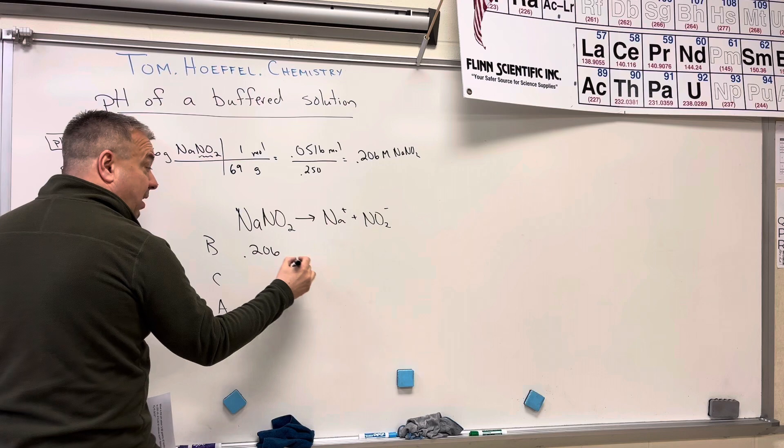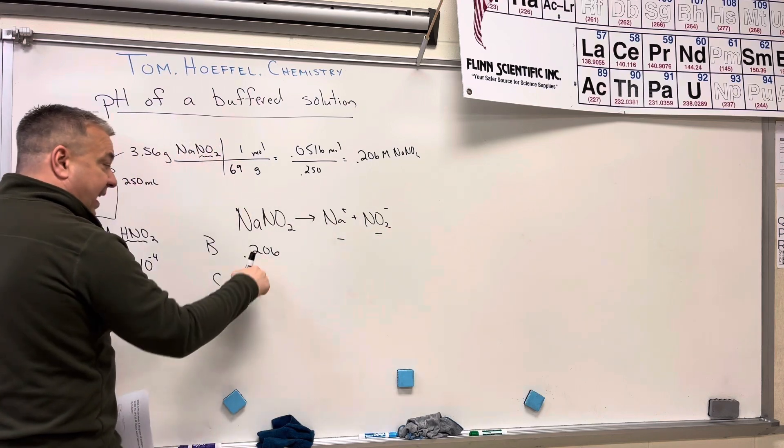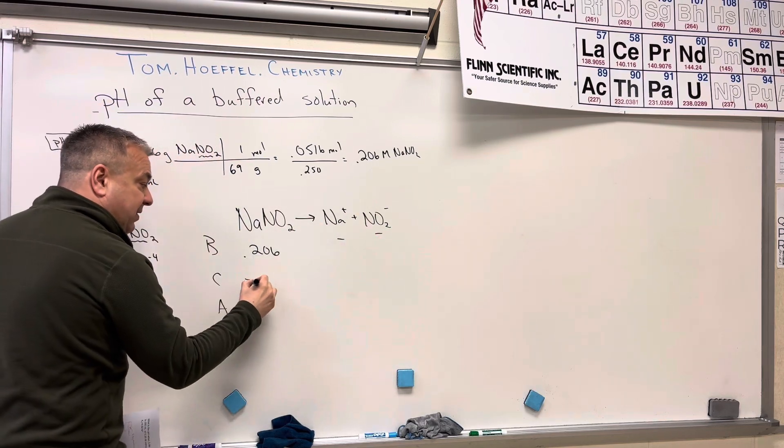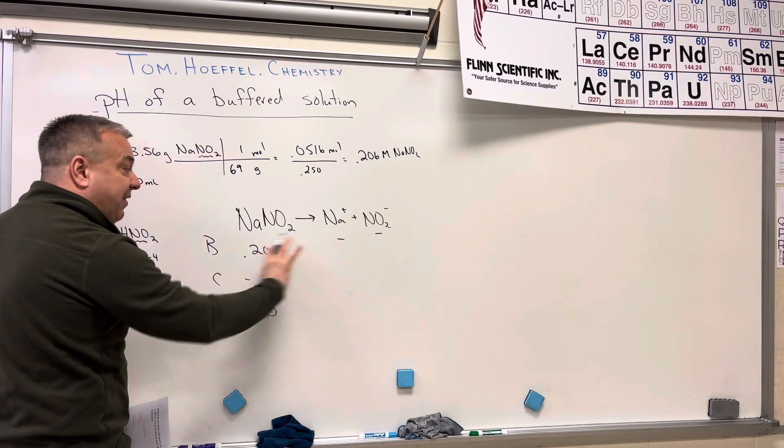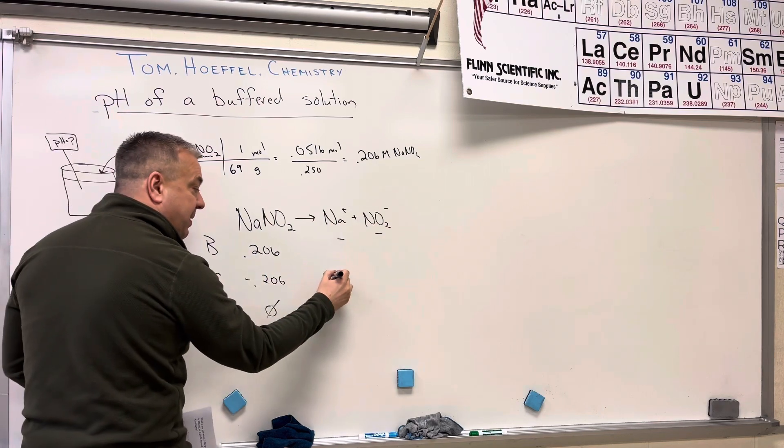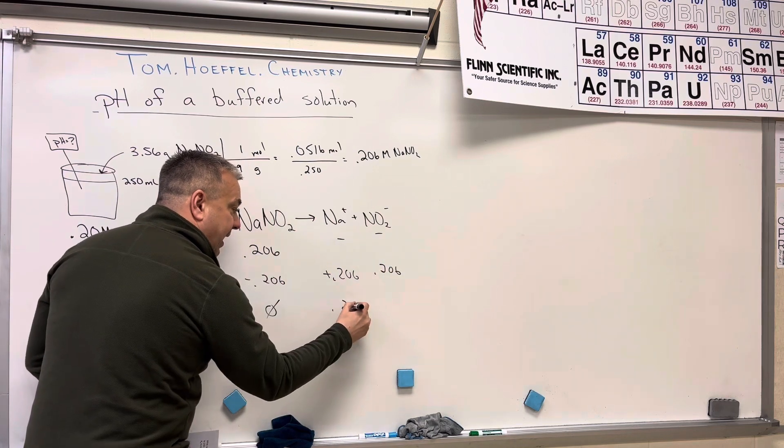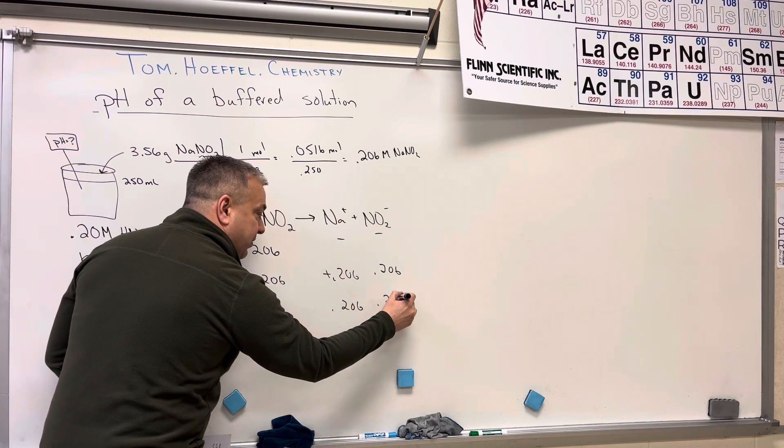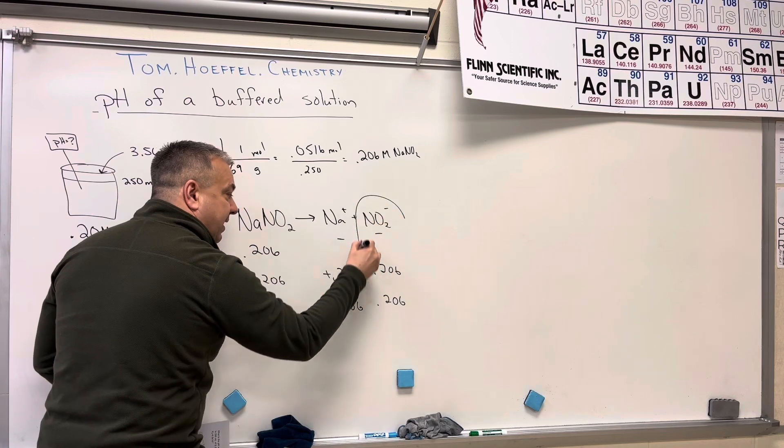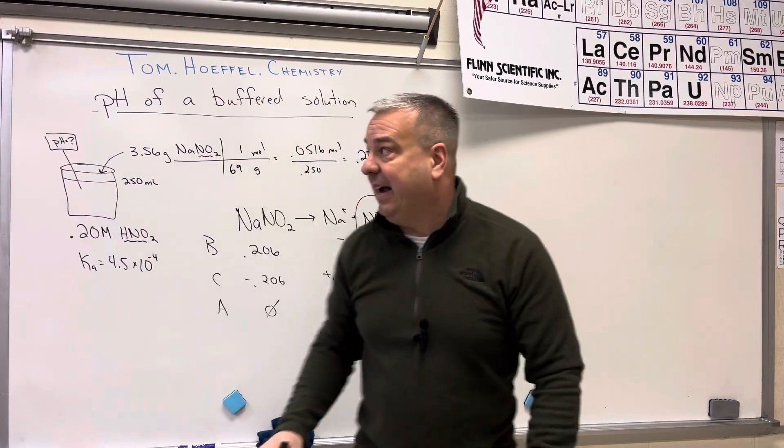So in the beginning, it was 0.206. And it's going to completely push to the right. So this is going to go down 0.206. And there's going to be nothing left of the reactants. It's all going to make products.